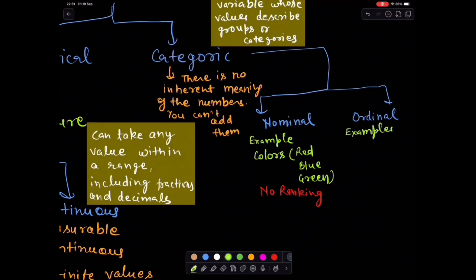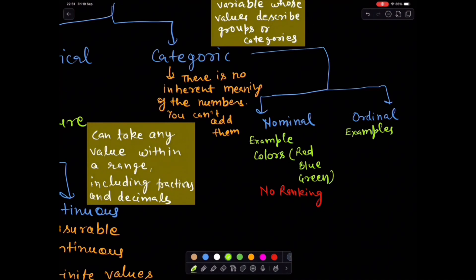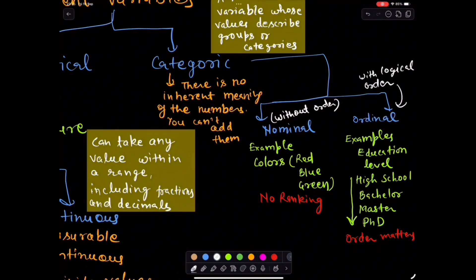Ordinal, categories with logical order. Example: education level, high school, bachelor, master, PhD. So they are here in ascending order, onwards. One thing to note here: order matters, but difference between levels isn't measurable.